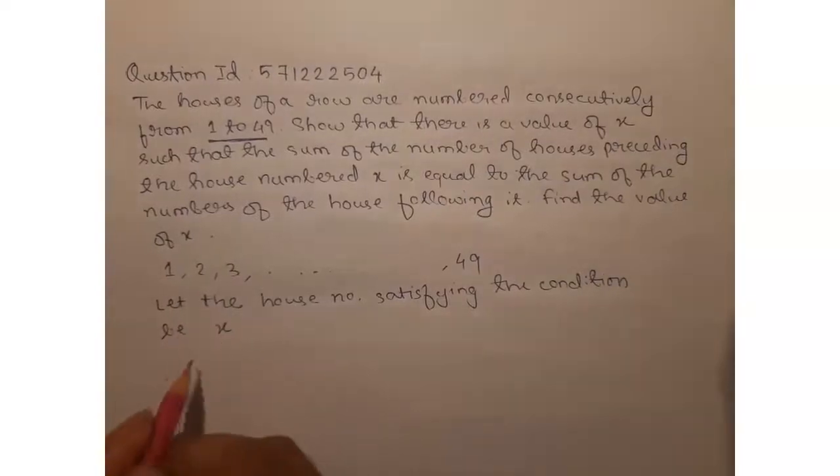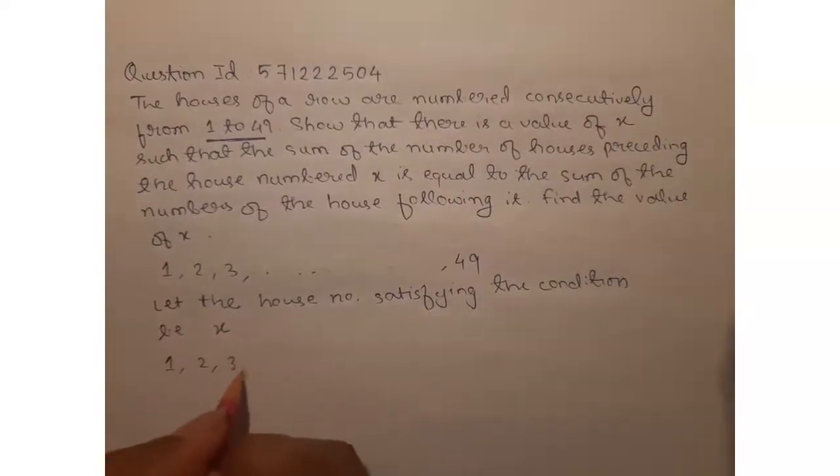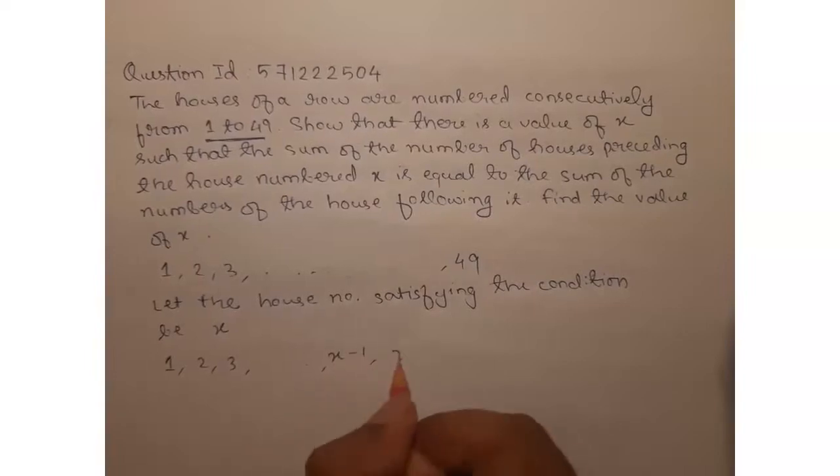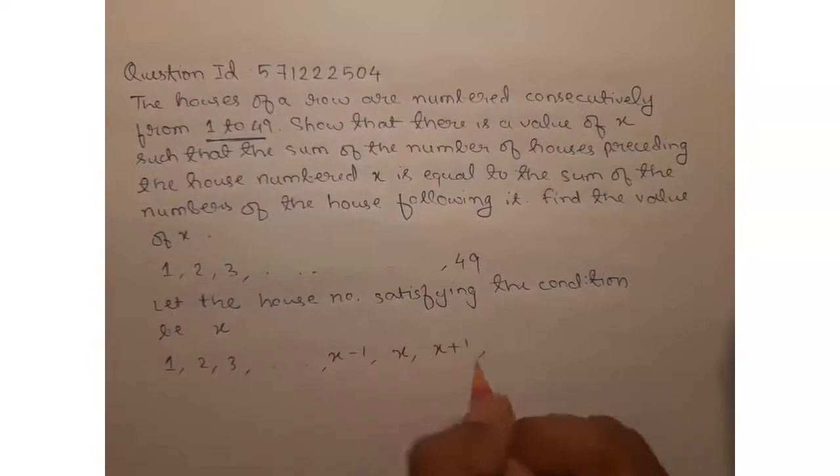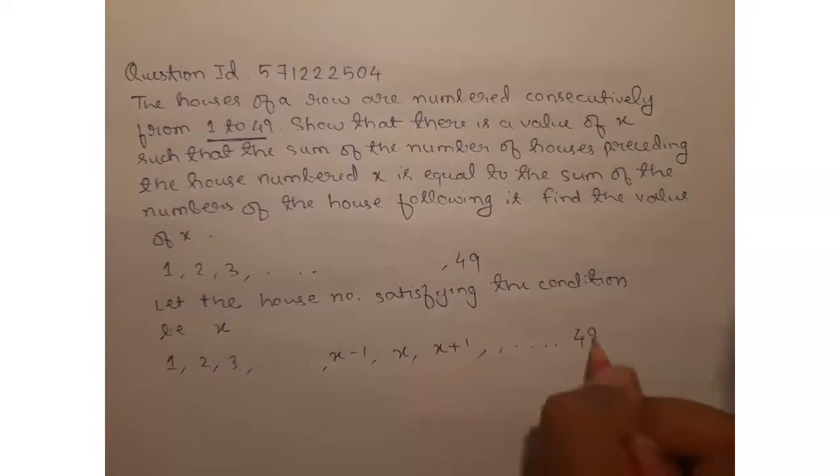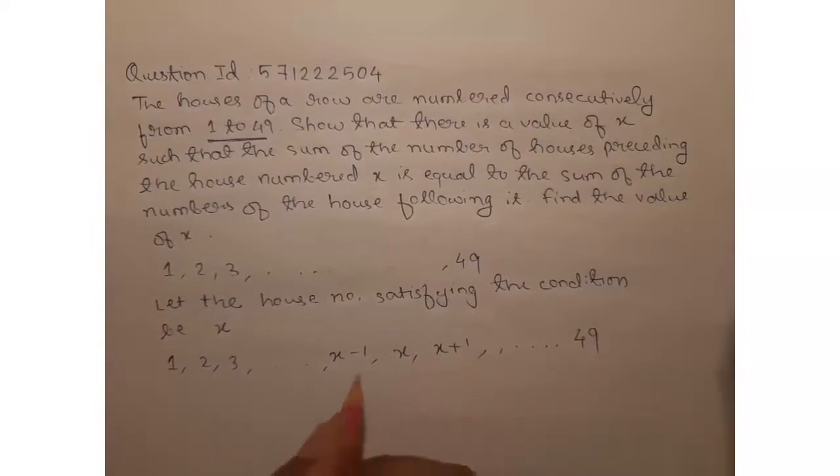So we have 1, 2, 3, then x minus 1, x, x plus 1, x plus 2, up to 49. This is the series we have. We need to find x such that the sum of all these numbers before x is equal to the sum of all these numbers after x.